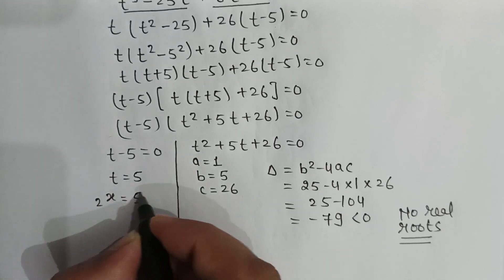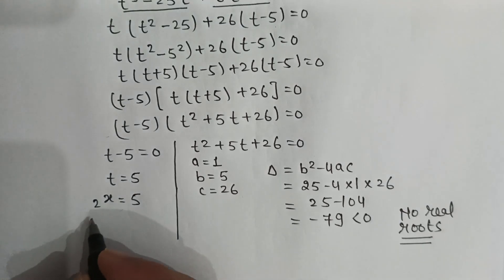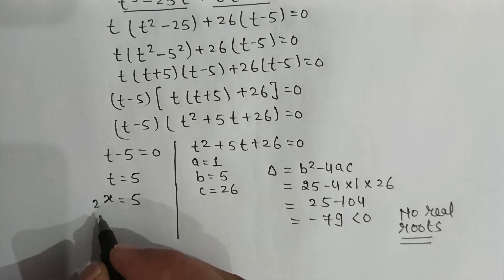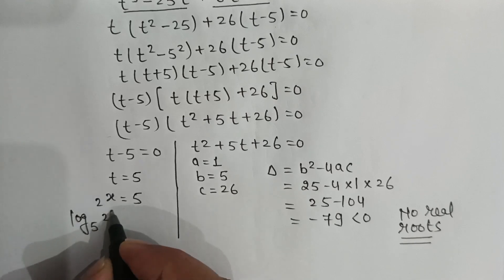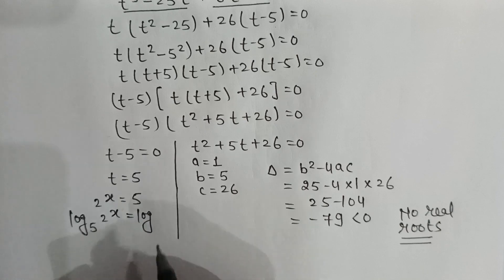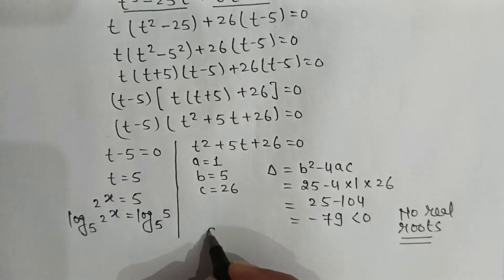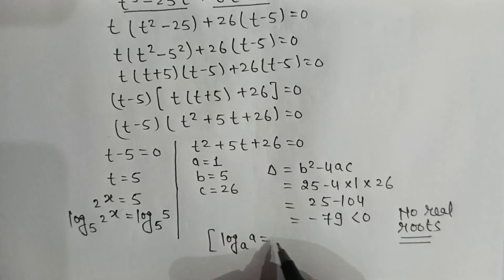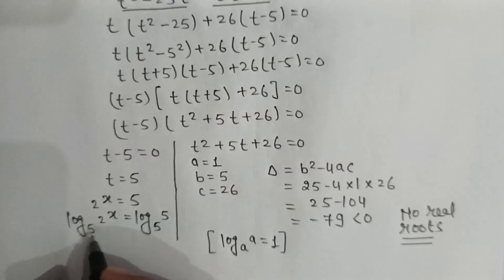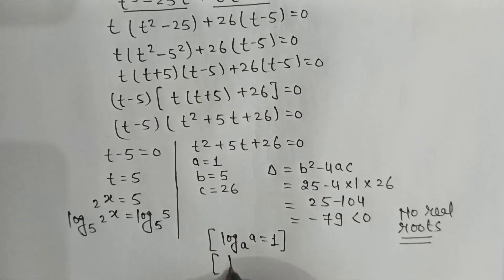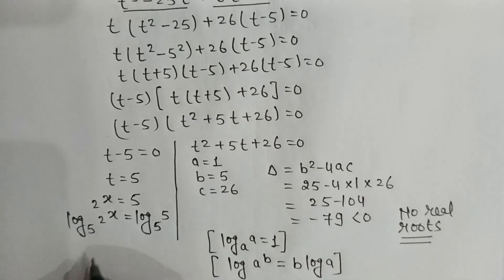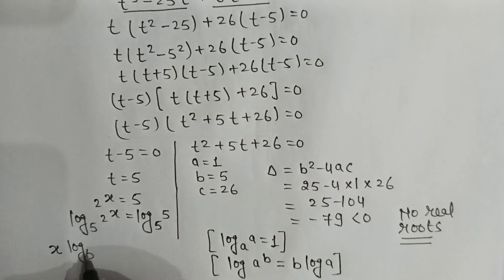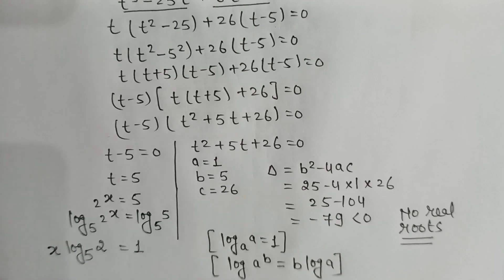Since there are no real roots from the quadratic, t is equal to 5. Rewriting t as 2 to the power x: 2 to the power x equals 5. Taking log base 5 on both sides: log base 5 of 2 to the power x equals log base 5 of 5. Since log base a of a equals 1, and log of a to the power v equals v times log a, it becomes x times log base 5 of 2 equals 1.